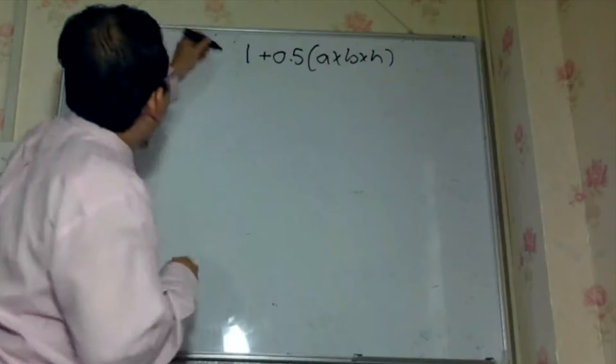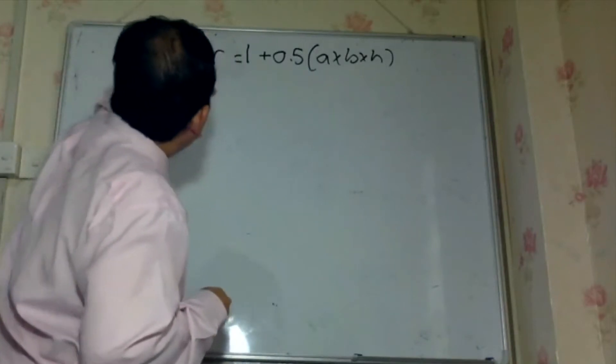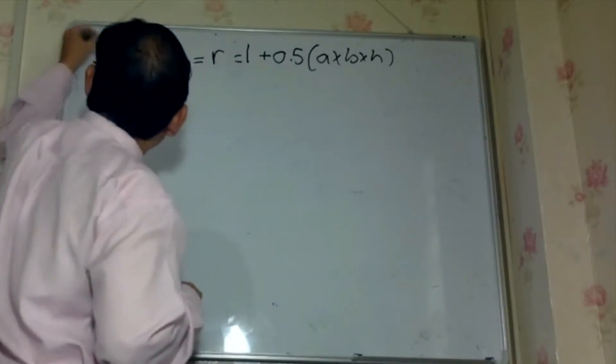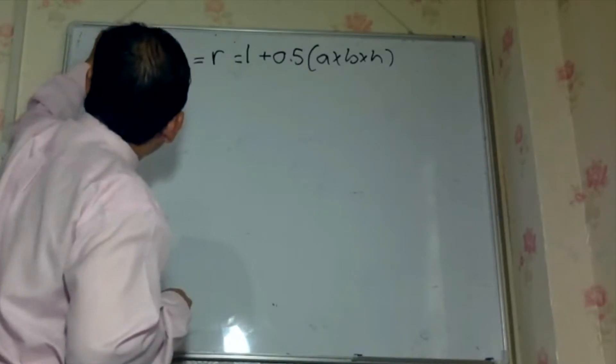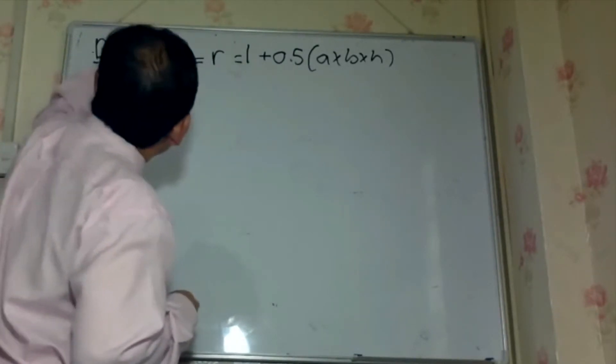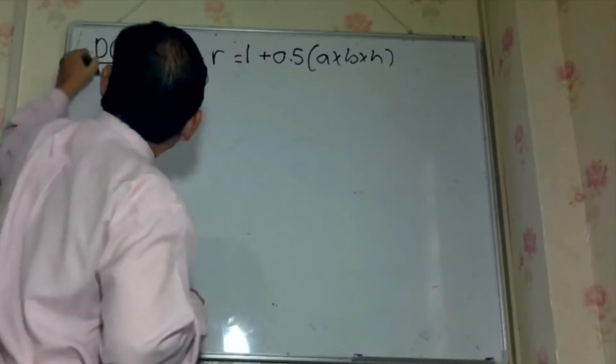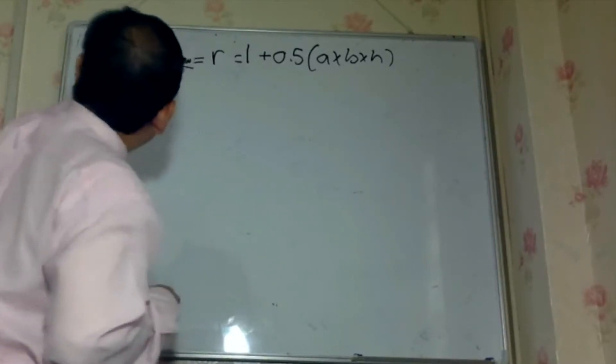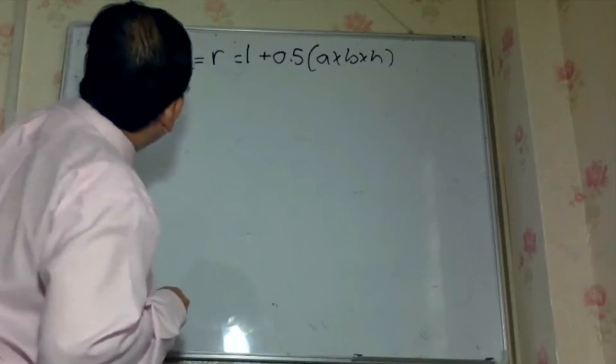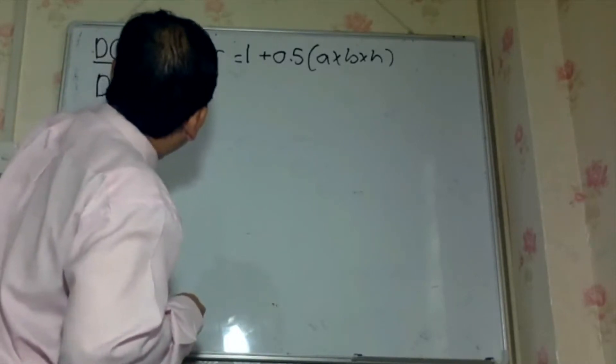Okay, R is equal to that and R also is equal to DO saturation minus DO raw, divided by DO saturation minus DO after.